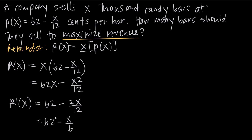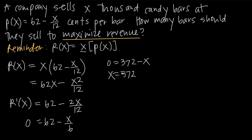Once you have the derivative function, your next step is always to set it equal to zero. We set R prime of x equal to zero and solve for x. Multiplying every term by 6 to clear the fraction, we get 372 minus x equals 0. Adding x to both sides gives x equals 372. This process of setting the derivative equal to zero is called finding critical points, so x equals 372 is a potential critical point of our revenue function.